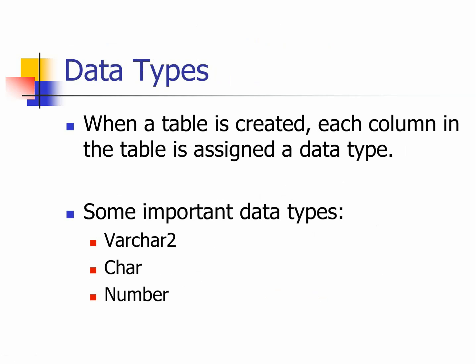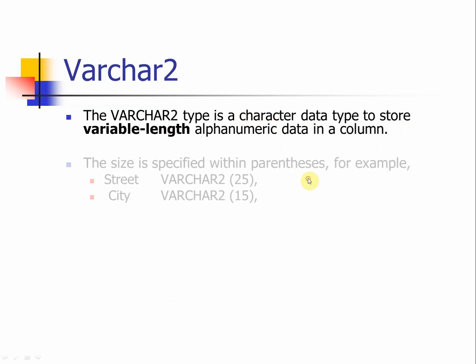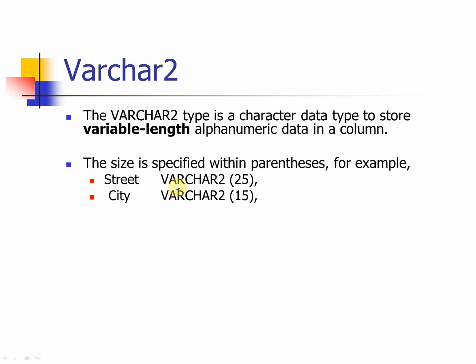When a table is created, each column is assigned a data type. The three important data types I want to discuss are VARCHAR2, CHAR, and NUMBER. You should already have a good understanding of these. For VARCHAR2, it is the correct data type to store variable-length character data in a column, making it very flexible. These are the two examples we have already seen.